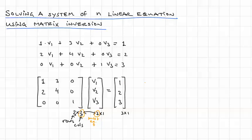For this first row, we would have 1 times V1 plus 3 times V2 plus 0 times V3. And that's exactly what we have here. And we proceed for the other two equations.